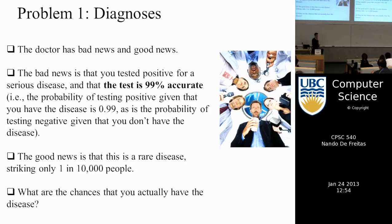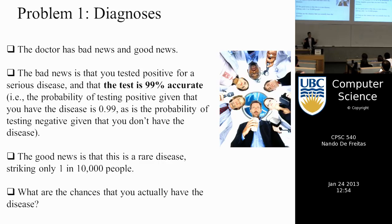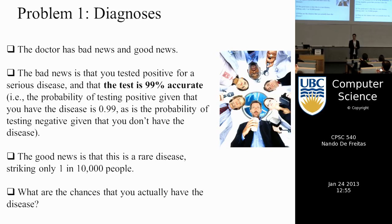Let's start with an example. You go to the doctor. The doctor has good news and bad news: the bad news is you've tested positive for a very serious disease, and the test is 99% accurate. The good news is that this disease is rare — only one in 10,000 people get it. Should you be very worried or not? About 15 people in the class would be very worried, about 14 would be totally chill, and roughly 20 would be somewhere in between.